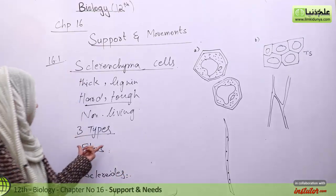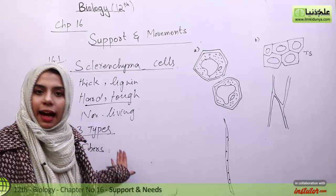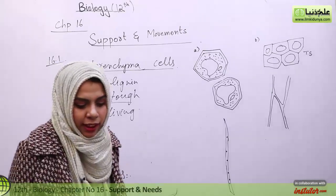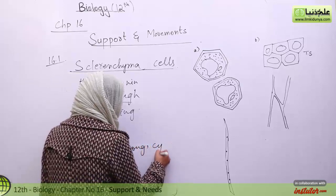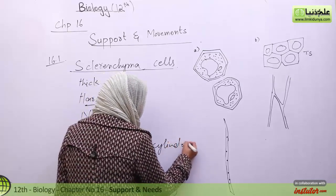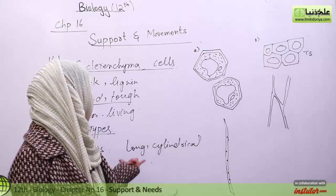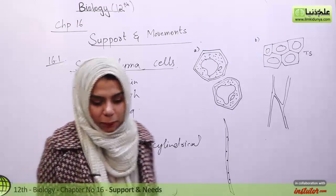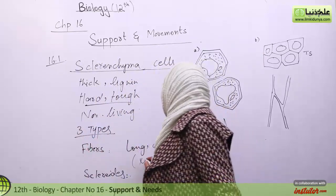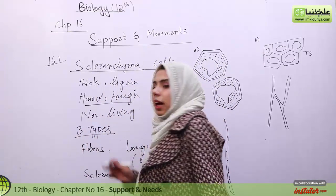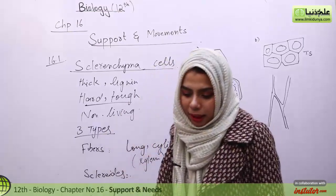So these are the three types of sclerenchyma cells: fibers, sclereids, and vessels. What are fibers? Fibers are long and cylindrical cells. You will find them inside the xylem as a solid bundle — they are long, cylindrical, and found inside the xylem always in a group in the form of a solid bundle.